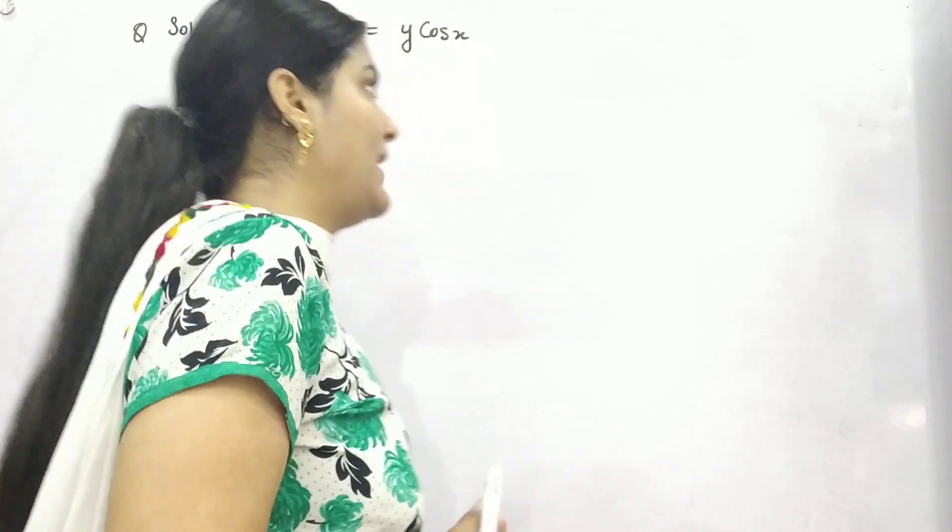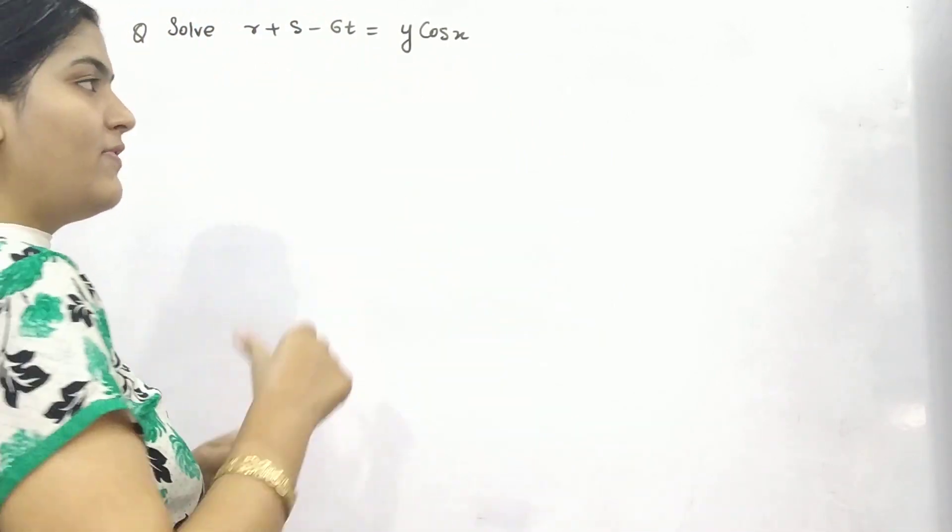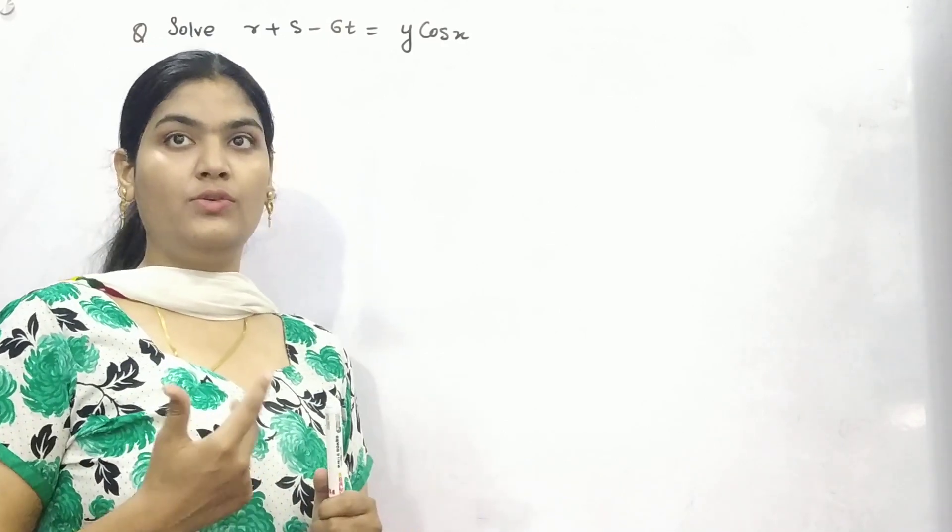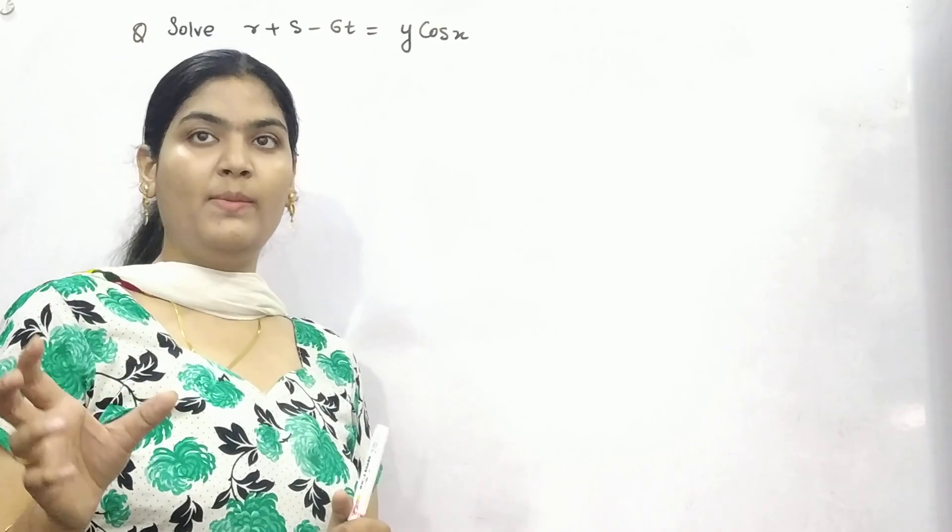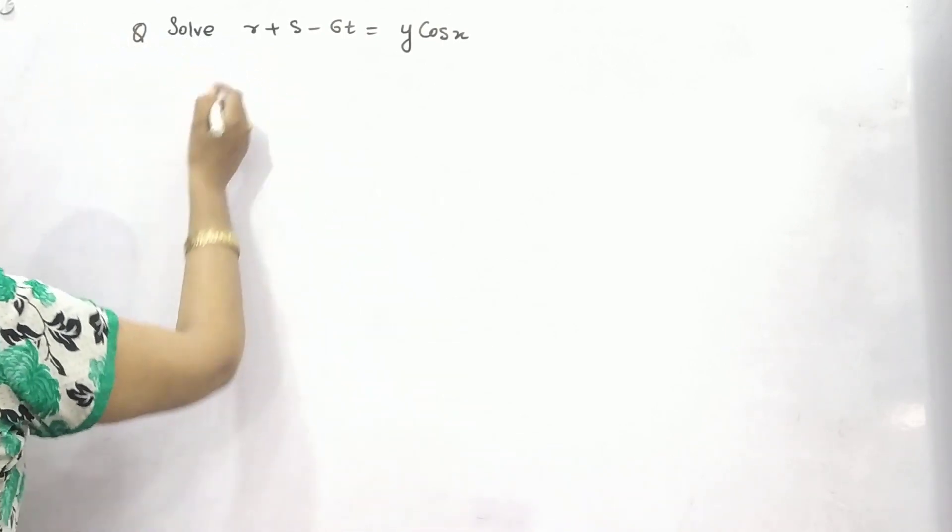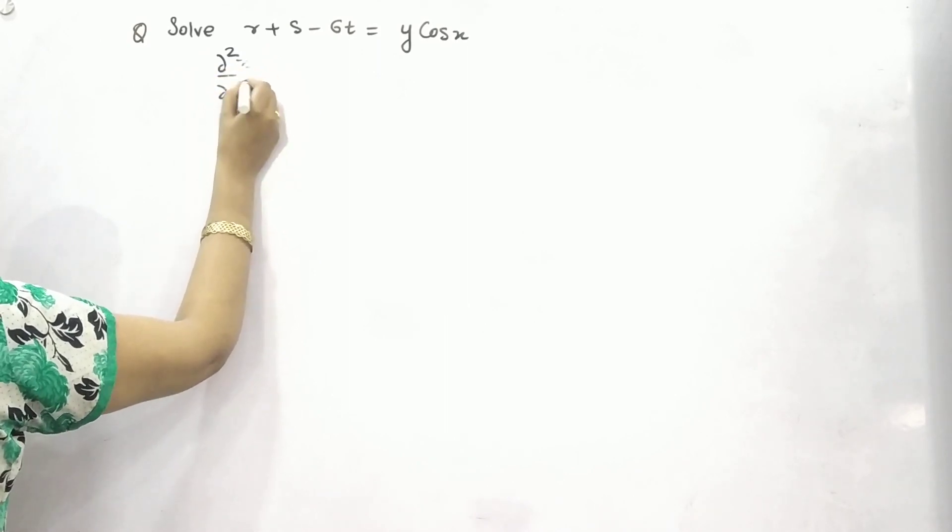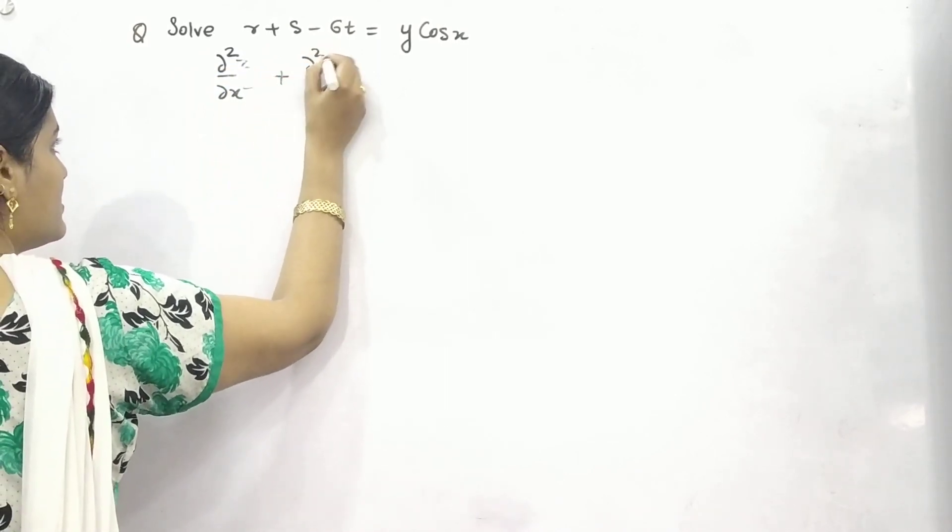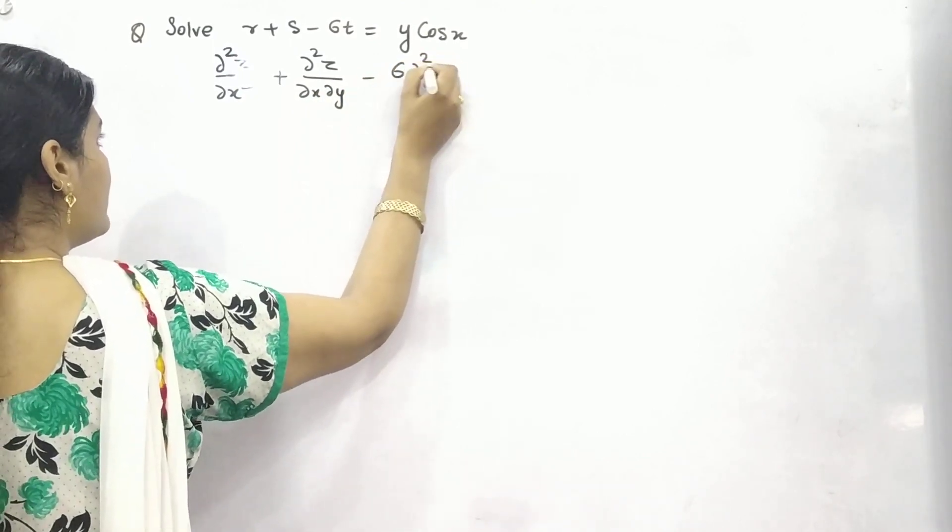How can we apply it? First of all, first two steps are same: finding out symbolic form, then auxiliary equation. So from that onwards roots and make a complementary factor. This is with respect to x, this is with respect to x and y, and this is with respect to y.